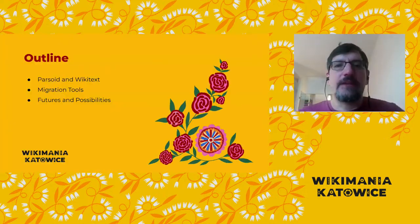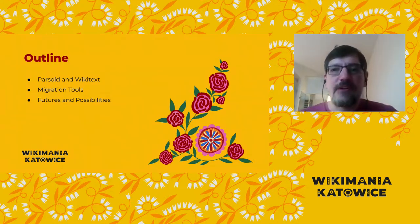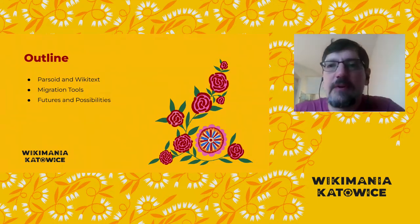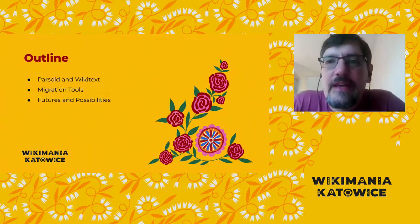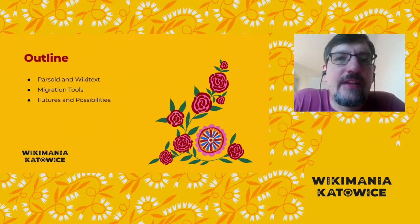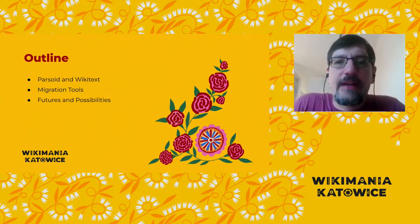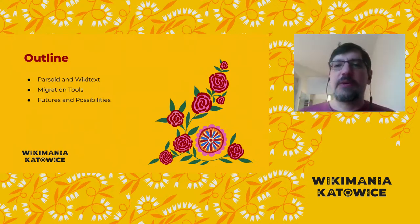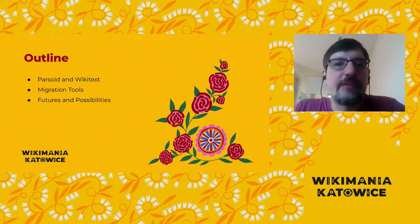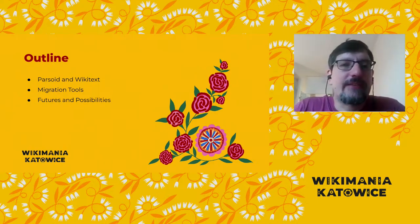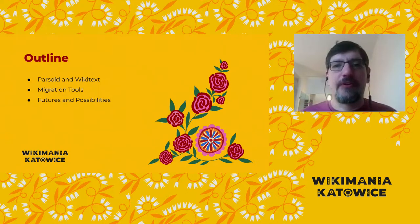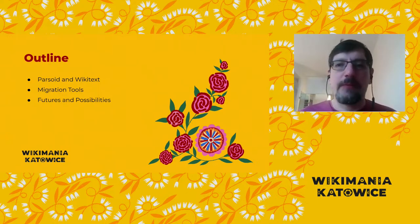This talk will be in three parts. I'll start by defining some terms and explaining what Parsoid is, how it relates to Wikitext, and how you can test Parsoid on your home wikis. Then we'll talk about how to handle changes in Wikitext, surveying some of the tools available to migrate content and fix Wikitext errors. And then finally, we'll talk about the road ahead — what changes are coming, what we're excited about, and what we might dream of for the future.